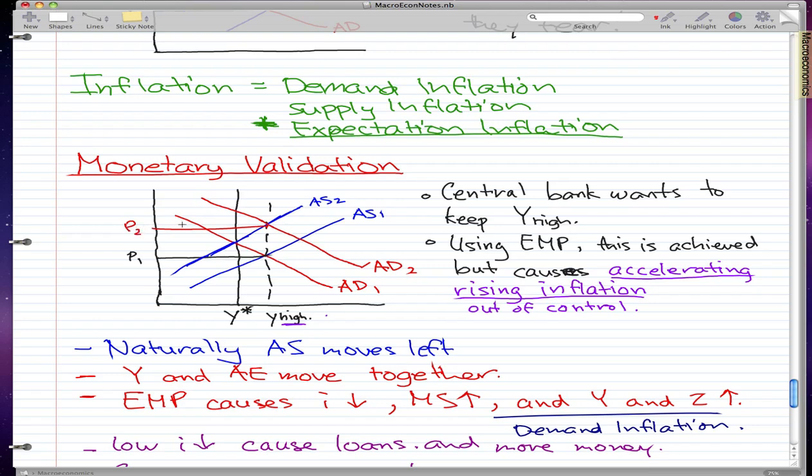It goes from P1 to P2, and then what will actually happen is again the AS will naturally move to the left. And then the central bank, wanting to keep the Y at Y high, they'll use EMP to keep AD moving right. So essentially what's happening is that naturally the aggregate supply is moving left, and the central bank wants to keep it so that Y is at Y high, so they use EMP.